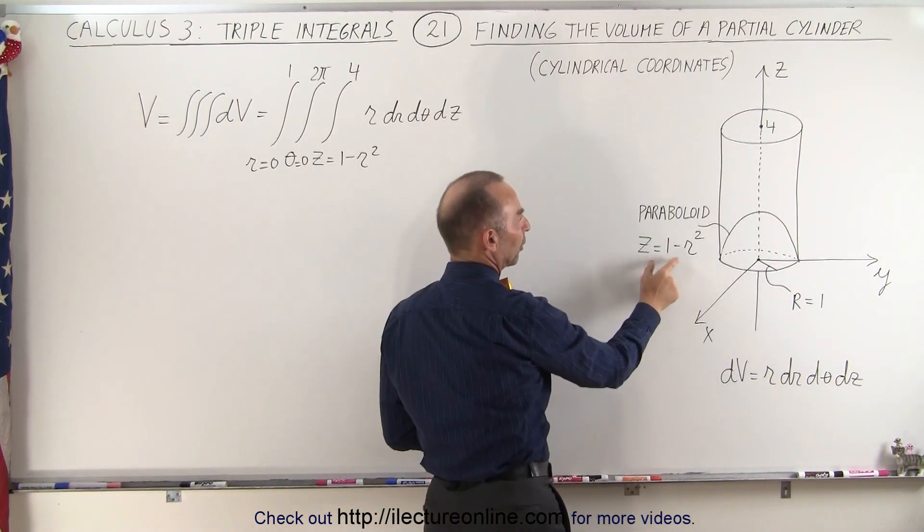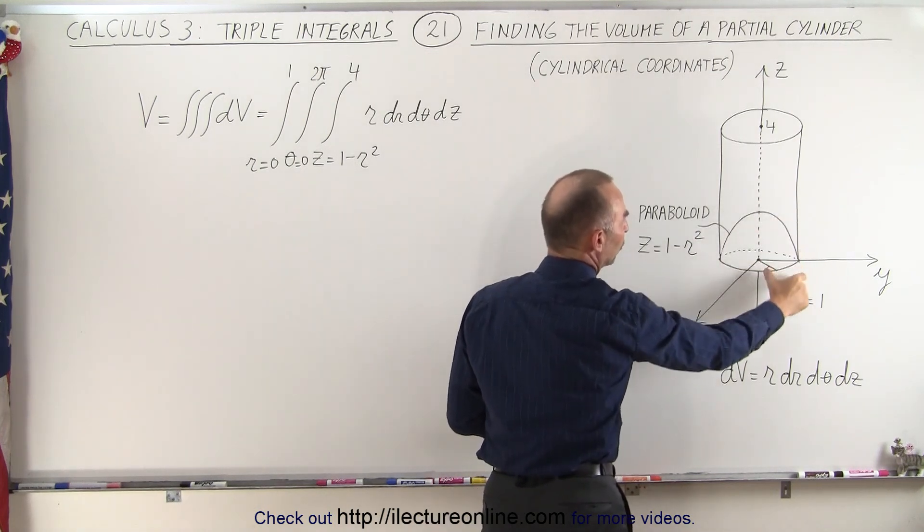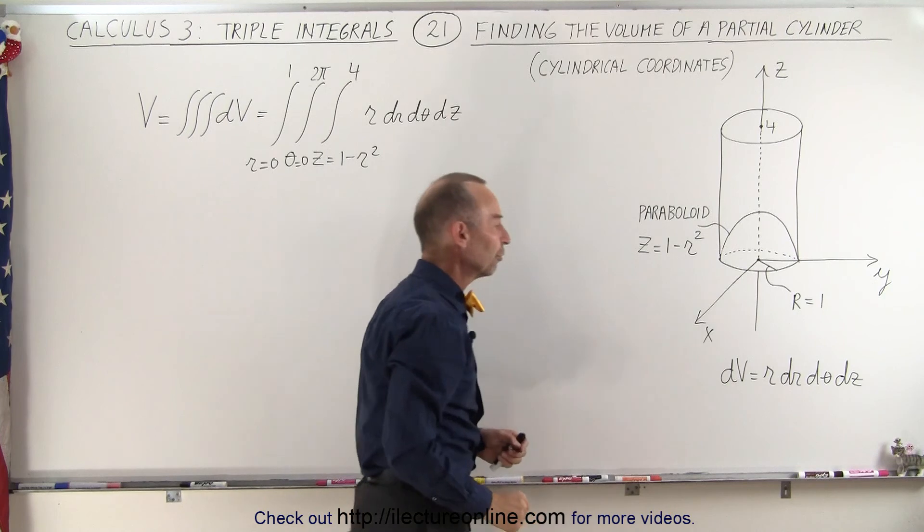The equation of the paraboloid is z equals 1 minus r squared. Notice the radius of the cylinder is equal to 1 and the height of the cylinder is equal to 4.